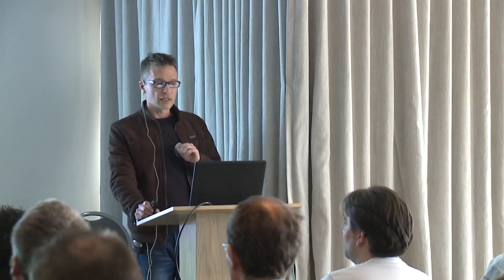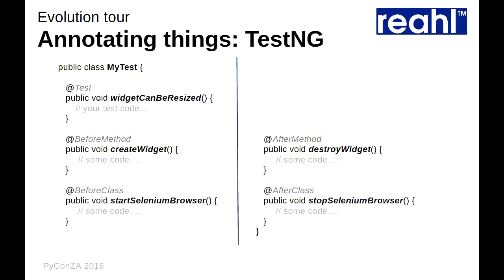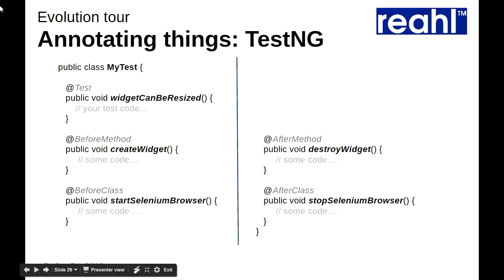I'm going to take a detour into Java world. Something happened in a project called TestNG - they discovered Java's annotations, which are very much like Python's decorators. What they did is very much like Nose in that they can run a method before the test or after, or before and after all tests in the class. Except that you don't have to use specific names for these things - you can call a method whatever you want and just annotate it, saying this is a test method or this is the thing that must run before each test method. I like this because it allows you to give all your methods meaningful names.